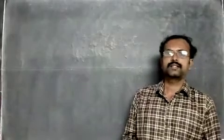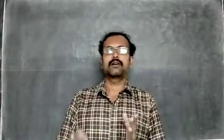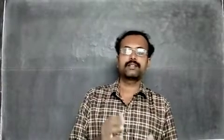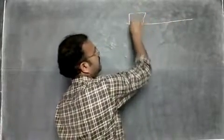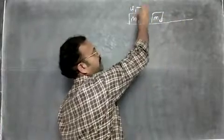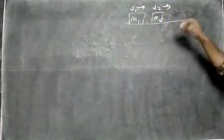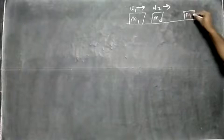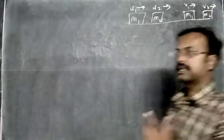Now we study the special cases to see what happens if objects have the same mass, or if one object has more mass, in an elastic collision in one dimension. Earlier we learned that in elastic collision in one dimension there are two masses, m1 and m2. Mass m1 was traveling with initial velocity u1, and mass m2 with initial velocity u2. Since u1 is greater than u2, m1 hits m2. After collision, m1 travels with velocity v1 and m2 with final velocity v2.